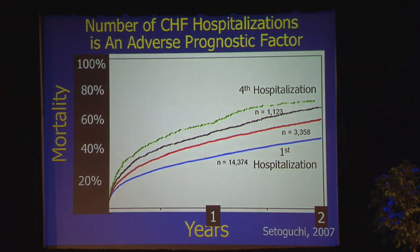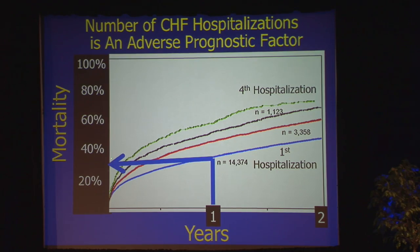But what happens for those patients who are on that revolving door? These are data from Canada. Just like in the United States, there's about a 30% one-year mortality after the first hospitalization. But look what happens after you have a second, third, and fourth hospitalization — there's a progressive and incremental increase in mortality.